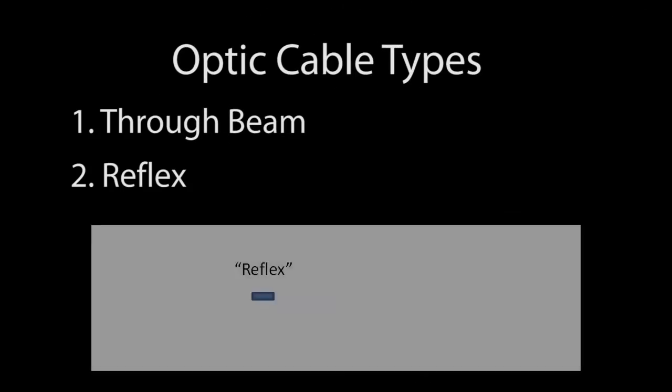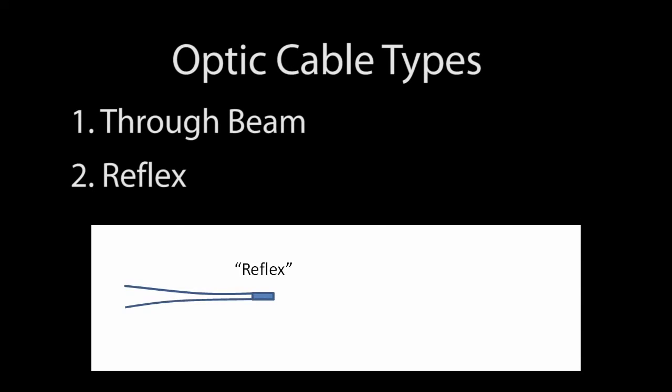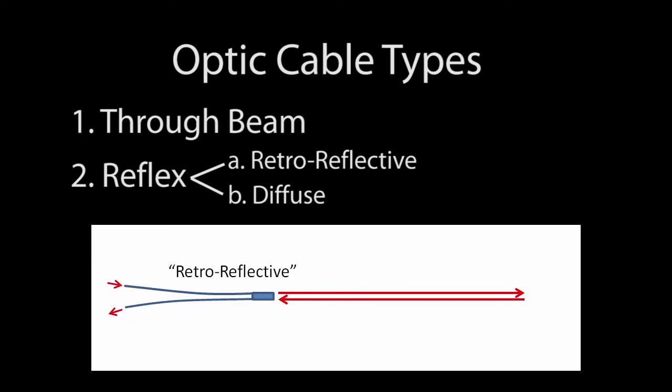The reflex cables have both transmit and receive cables in the same head. One shoots the light out, the other receives the light reflected back. Some folks break that up into retroreflective and diffuse. Retroreflective works like a through beam. The amplifier expects to see light from the reflector and when an object breaks that beam, the light goes away and triggers the sensor. So we also call that dark on because the output gets triggered when the object blocks the beam.